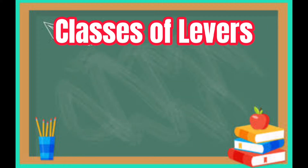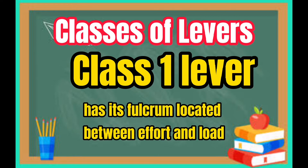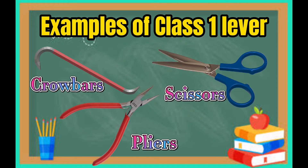Classes of levers. The class 1 lever has its fulcrum located between effort and load. Examples of class 1 lever are crowbars, scissors, and pliers.